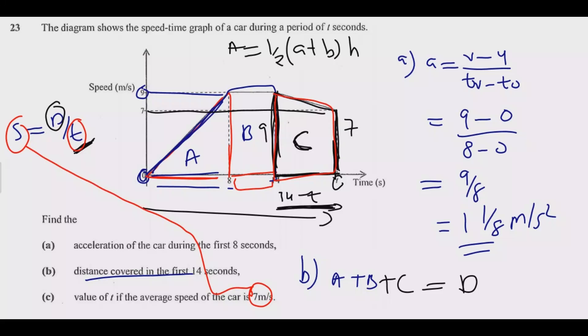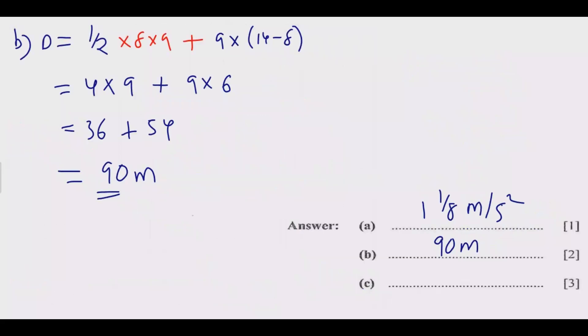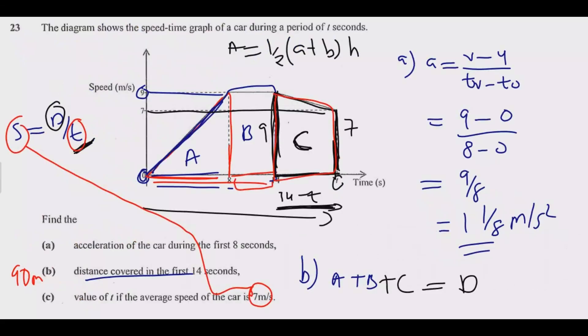Once we do that, then you're going to add that one to the area that we found in B, which is 90. So it's important that you get 90 correct. If you don't get this question correct in B, then you waste the rest of time. So distance is equal to 90 plus C. What is C? So C is equal to half times, we have 9 plus 7, then times T minus 14. Not 14 minus T, it's T minus 14.